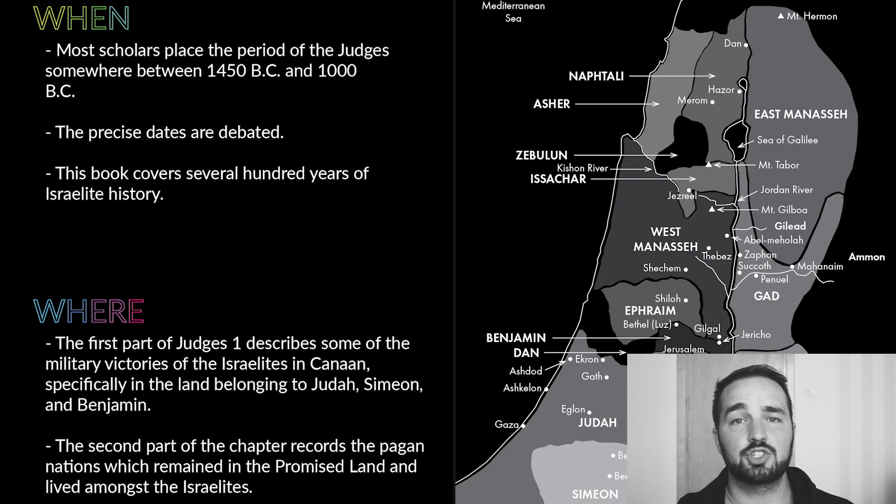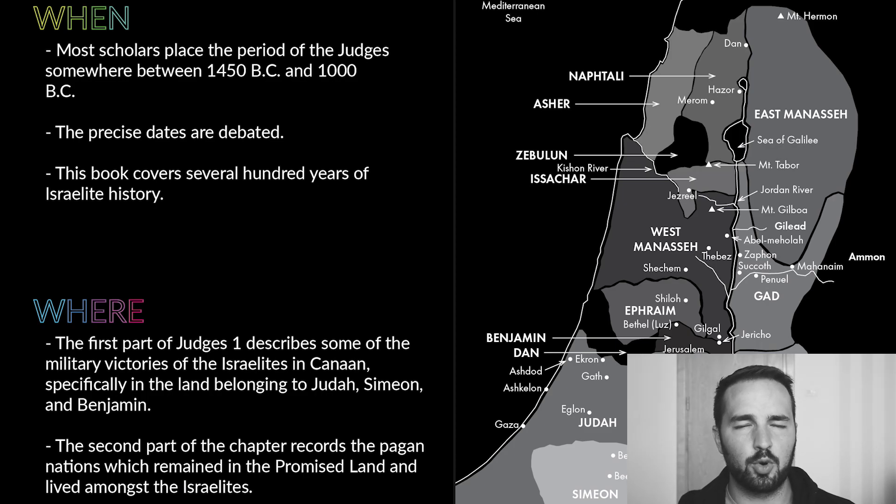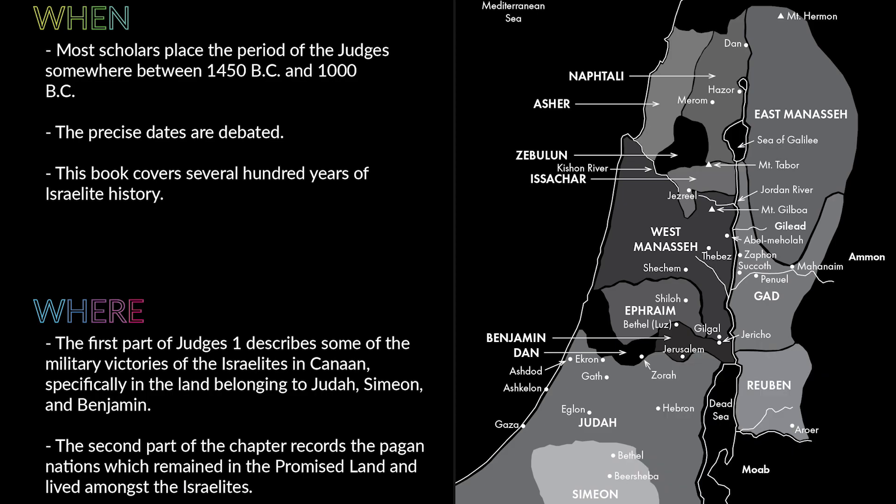Moving on to our next section — where did these events happen? We've got our handy dandy map, which is much fuller than it was in the book of Joshua. Chapter one and chapter two kind of link this book back to the story being told in the book of Joshua. The first part of Judges chapter one describes some of the military victories the Israelites had in Canaan when they were conquering the land.